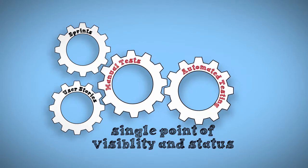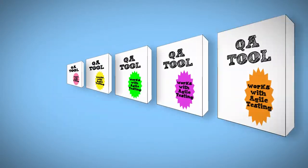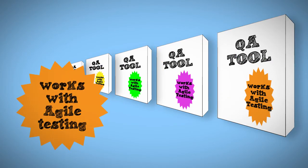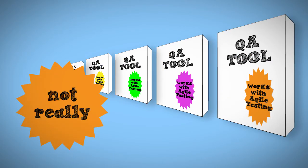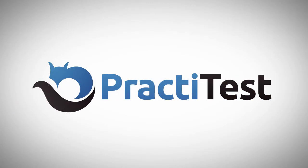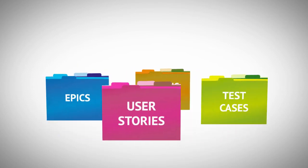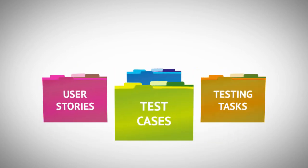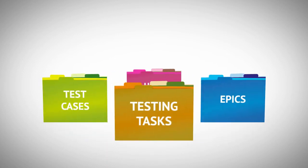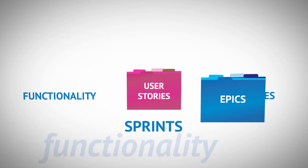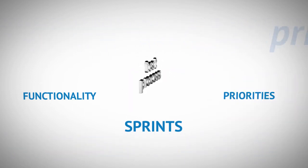Now, most QA tool vendors will claim they work in today's Agile testing environment, but their software really hasn't changed. PractiTest is a test management tool designed for Agile testing because it allows you to organize your Agile epics, user stories, test cases, and testing tasks simultaneously based on sprints or on other project criteria such as functionality, priorities, and other aspects of your test process.